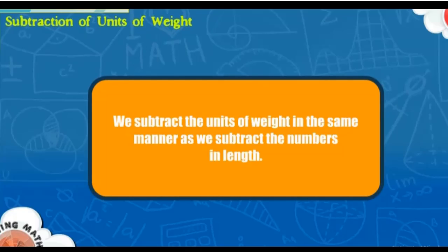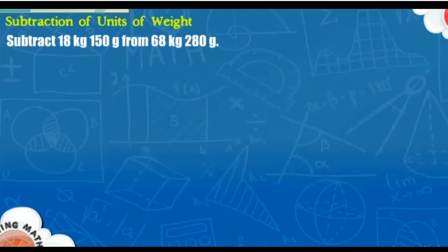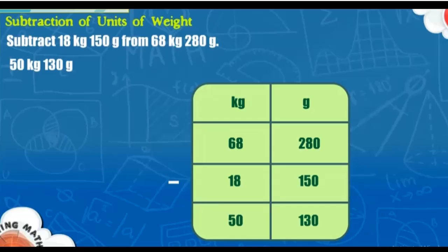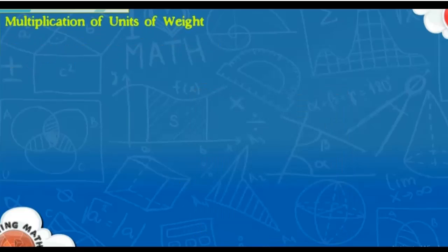Subtraction of units of weight: We subtract units of weight in the same manner as we subtract numbers in length. Subtract 18 kilograms 150 grams from 68 kilograms 280 grams. Arrange the numbers in proper columns with the smaller one below the bigger. First subtract the grams, then subtract the kilograms. The answer is 50 kilograms and 130 grams.